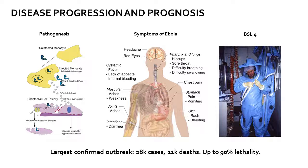Infected cell types include monocytes, macrophages, and dendritic cells, among numerous others. As the virus spreads and causes endothelial cell toxicity, the resulting cell death and cytokine dysregulation causes endothelial instability, further promoting spread.